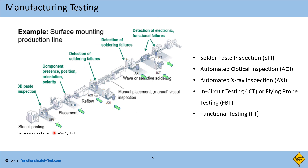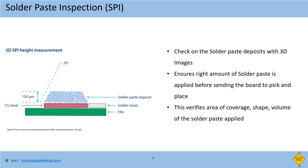It starts with SPI — solder paste inspection — AOI — automated optical inspection — AXI — automated x-ray inspection — ICT — in-circuit testing. There is one another method which is flying probe testing, and finally functional testing.